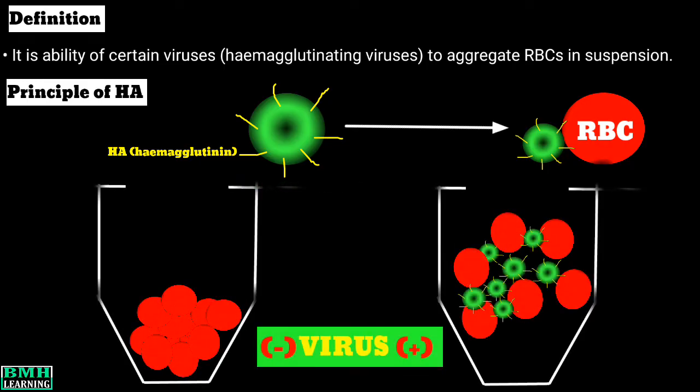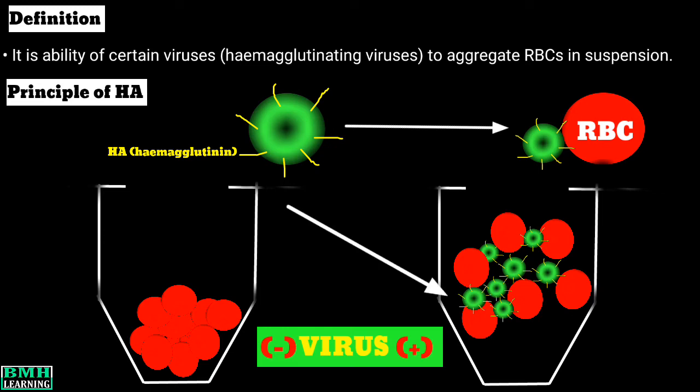In the absence of virus particles, RBCs precipitate by gravity to the bottom of the well, giving rise to a distinct red-colored dot in a conical-shaped well. In the presence of virus particles, RBCs come together as a result of the interaction between HA proteins of the virus and the RBCs.